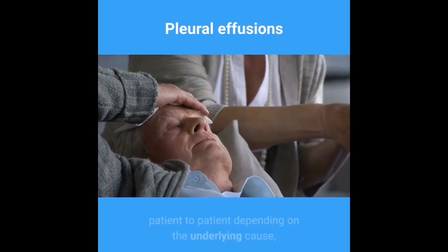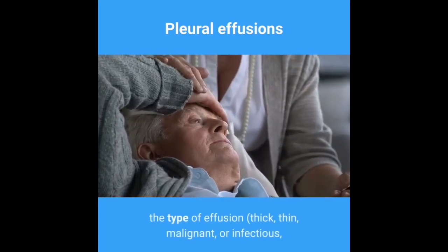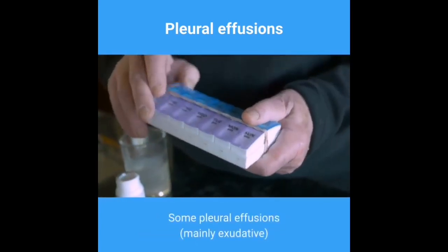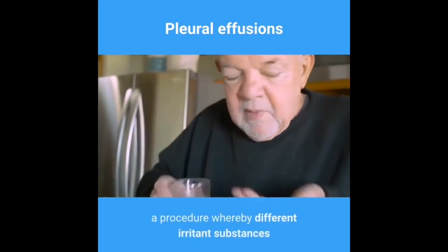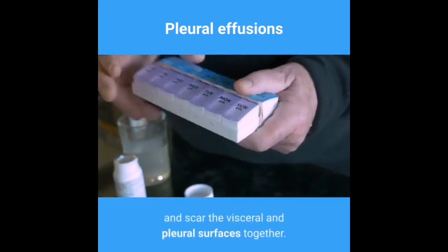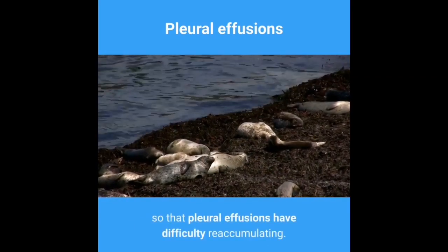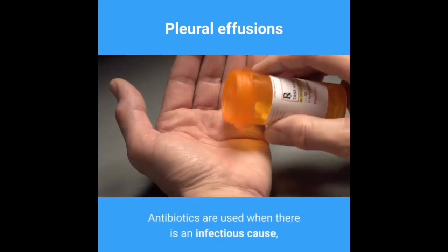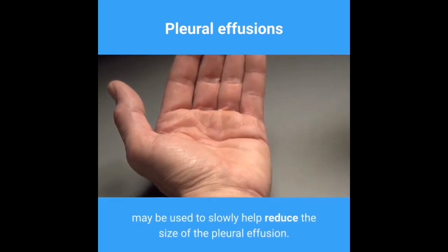The need for repeated thoracentesis varies from patient to patient depending on the underlying cause, the amount of effusion fluid, the type of effusion (thick, thin, malignant, or infectious), and if there is recurrence. Some pleural effusions — mainly exudative — may require surgery to break up adhesions, while others may require pleurodesis (pleural sclerosis), a procedure whereby irritant substances or medications are inserted into the pleural space to fibrose and scar the visceral and pleural surfaces together, sealing the pleural space so effusions have difficulty reaccumulating. Medications depend on the underlying cause; antibiotics are used for infectious causes, while diuretics such as furosemide (Lasix) may help reduce the size of the pleural effusion.